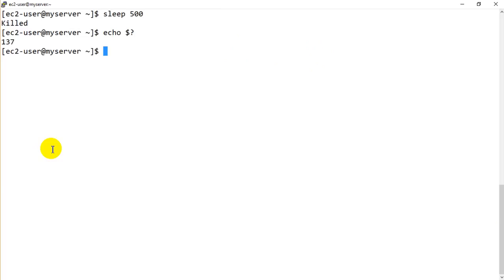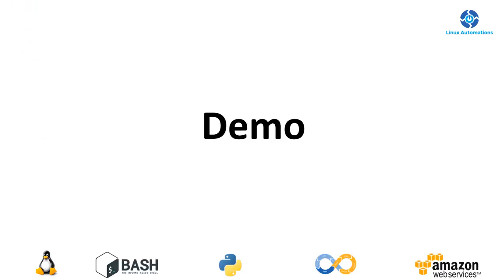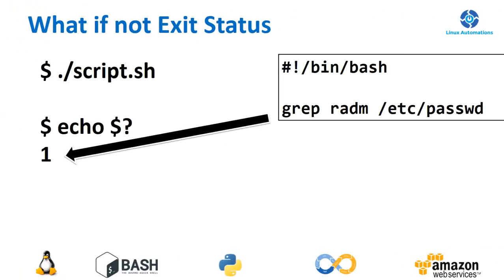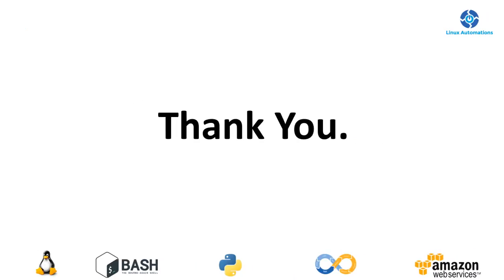One last point: if no exit status is specified using the exit command, your shell script is going to return the exit status of the last executed command. So in an example with a single grep command, we get the exit status of that grep command. Thank you for watching — please subscribe to my channel and have a great day!